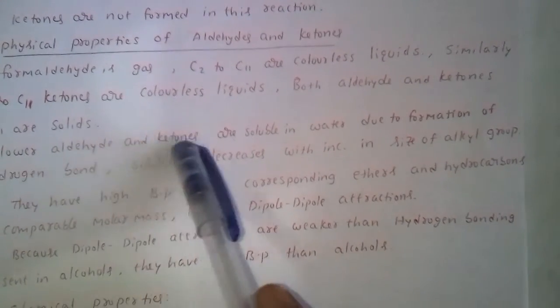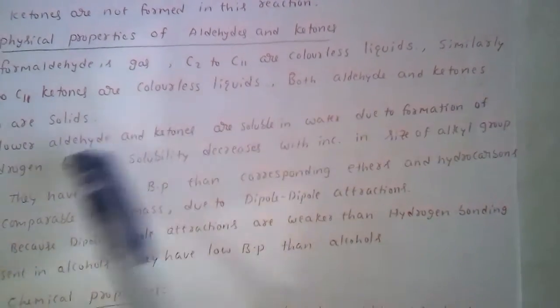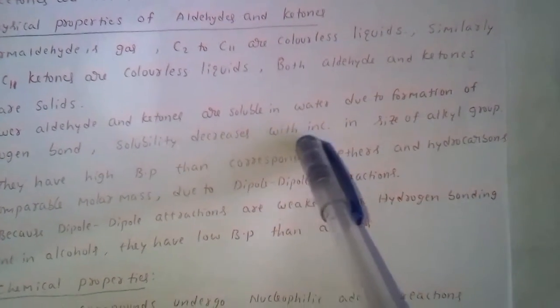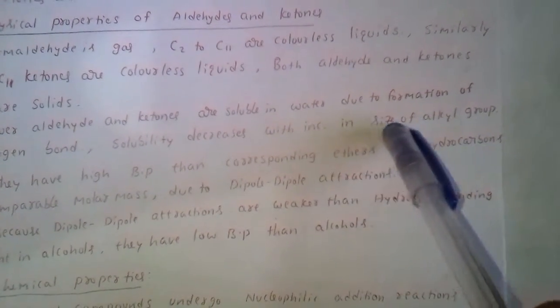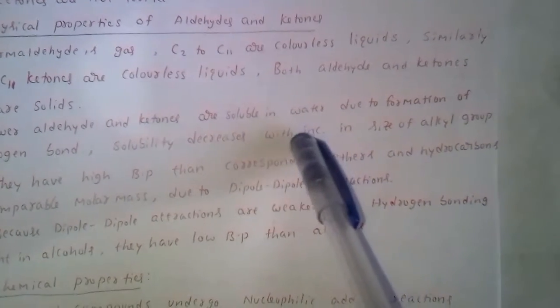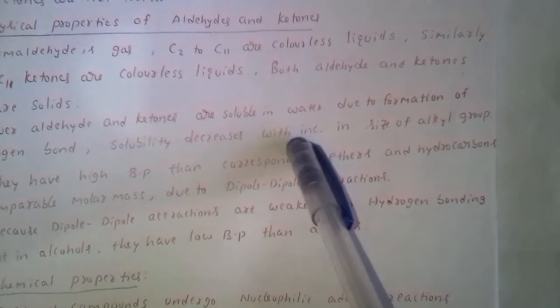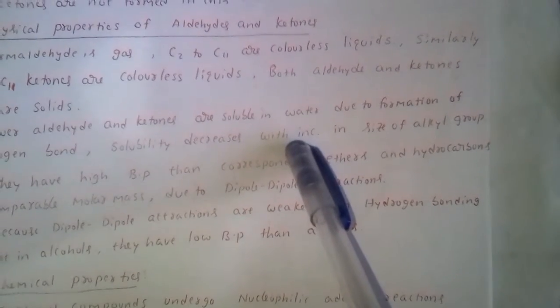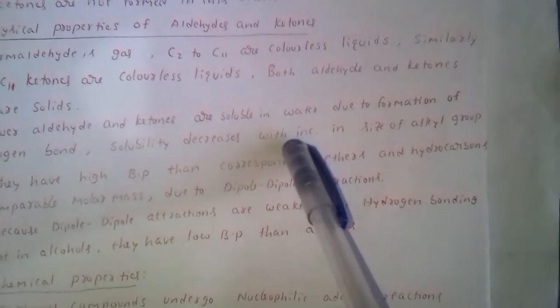Lower aldehydes and ketones are soluble in water due to the formation of intermolecular hydrogen bonding. Solubility decreases with increase in the size of the alkyl group — that means acetaldehyde is more soluble than propanaldehyde, and propanaldehyde is more soluble than butanaldehyde, and so on.